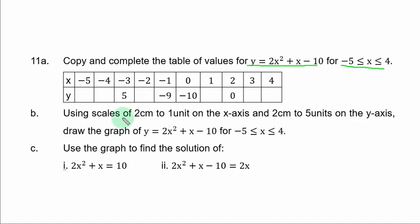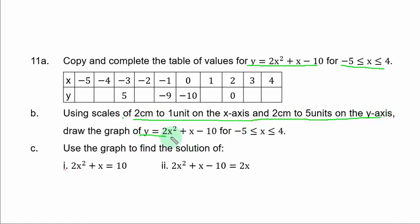Part B: using scales of 2 cm to 1 unit on the x-axis and 2 cm to 5 units on the y-axis, draw the graph of y = 2x² + x - 10 for -5 ≤ x ≤ 4. Part C, use the graph to find the solution of: (i) 2x² + x - 10 = 0, and (ii) 2x² + x - 10 = 2x.